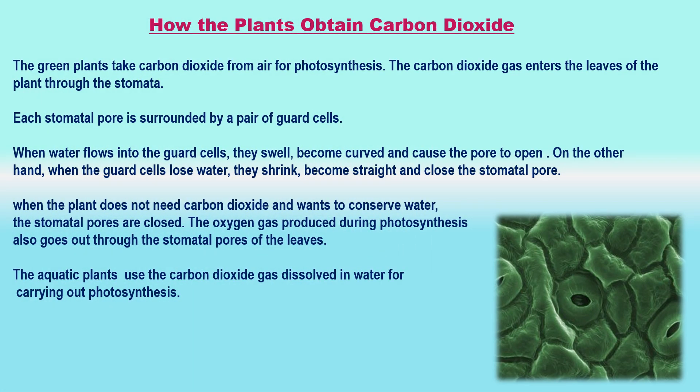How do plants obtain carbon dioxide? There are a large number of tiny pores called stomata on the surface of leaves. Carbon dioxide gas enters the leaves through the stomata. Each stomatal pore is surrounded by a pair of guard cells which control the opening and closing of stomatal pores. When water flows into the guard cells, they swell, become curved and cause the pore to open. When the guard cells lose water, they shrink, become straight and close the stomatal pore. A large amount of water is also lost through open stomatal pores, so when the plant does not need carbon dioxide and wants to conserve water, the stomatal pores are closed.